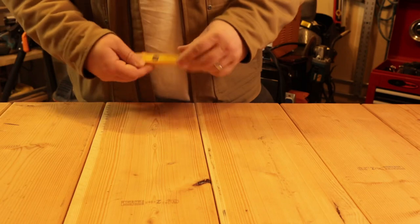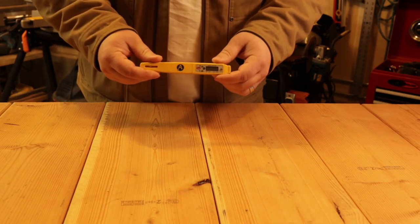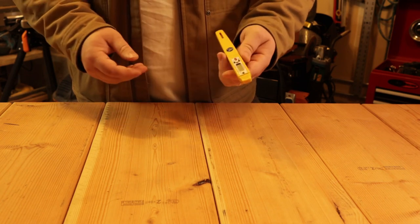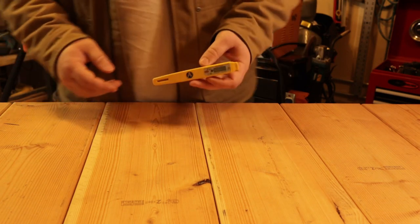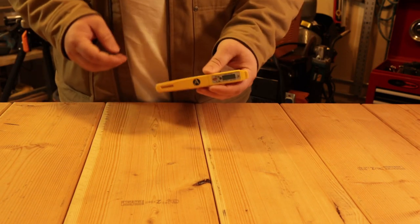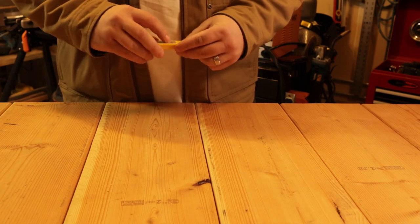Number three on my list is the pocket thermometer. This is my brand of choice—it's called the Cooper Atkins. You can look these up on Amazon. I'll put a link down in the description for all this stuff, so at the end of the video if there's anything you want to check out, check it out down there.